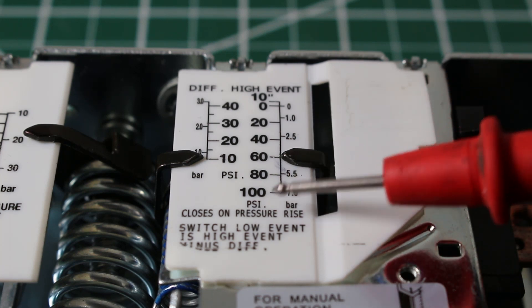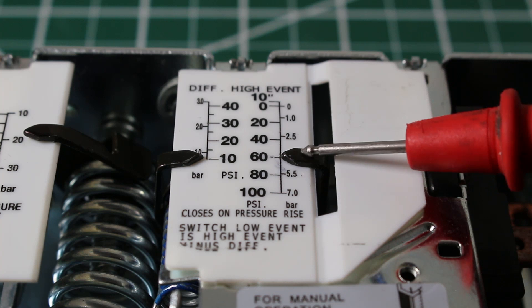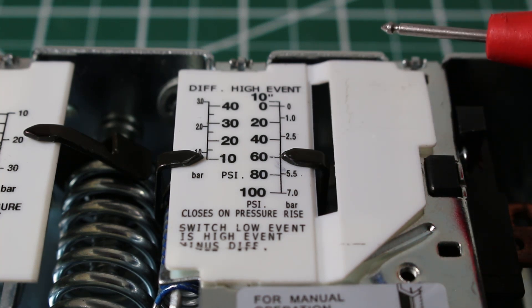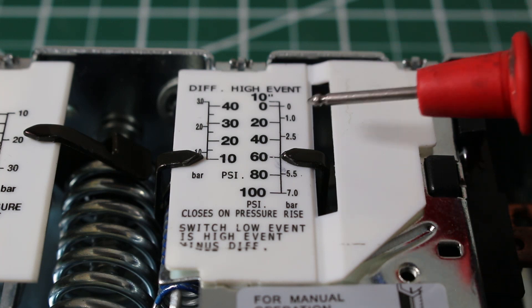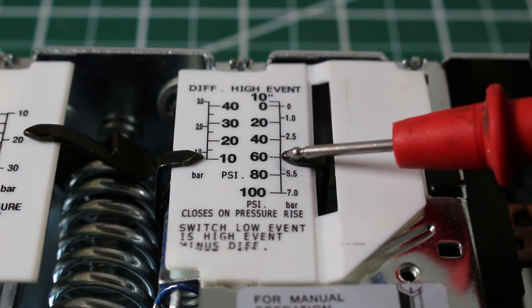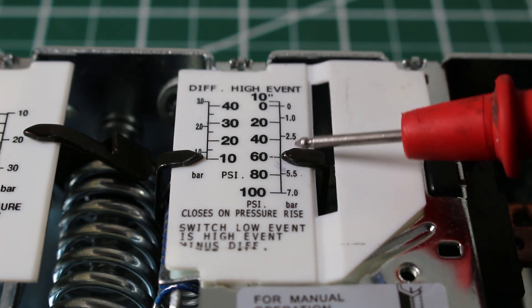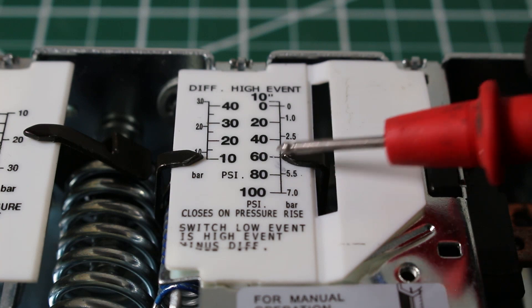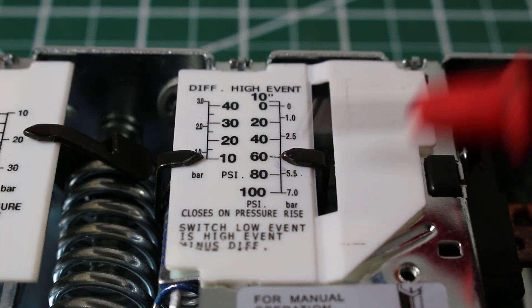But what is our high event? 60. So when the system shuts down, it's probably going to equalize in pressure. And when it equalizes, the system's pressure will rise. Once it rises back up to 60, it's going to come back on again. But if it happens to fall at 50, it's going to open again.